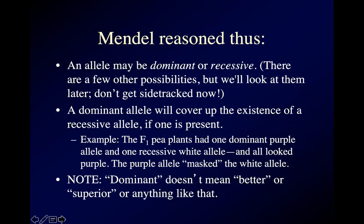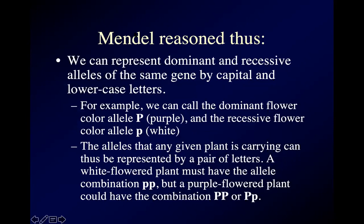Alleles may be dominant or recessive, and a dominant allele will cover up the existence of a recessive allele if there is one present. So those F1 pea plants had one dominant purple allele and one recessive white allele, but they all looked purple. If you're a heterozygous pea plant, the purple allele masks the presence of the white allele, but that white allele is still there and can be passed on to the next generation.